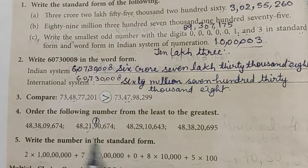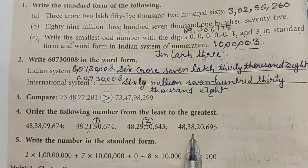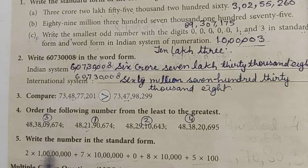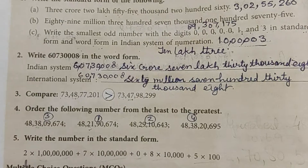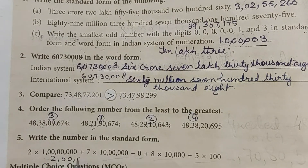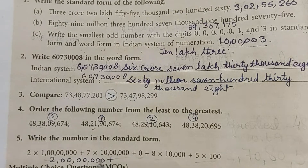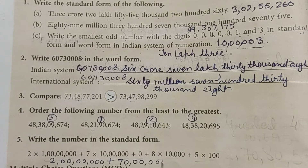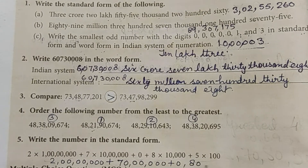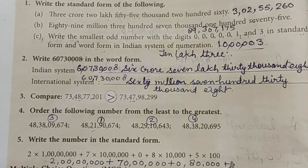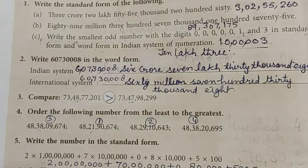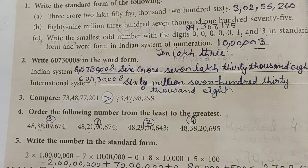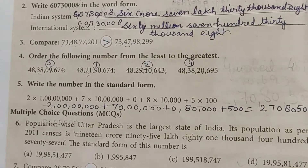The ordering from least to greatest gives us: first, second, third, and fourth. Now write the number in standard form from its expanded notation: 2 + 7 + 0 + 80,000 + 500 equals 2,70,805 — wait, that gives us 270,805. Okay.